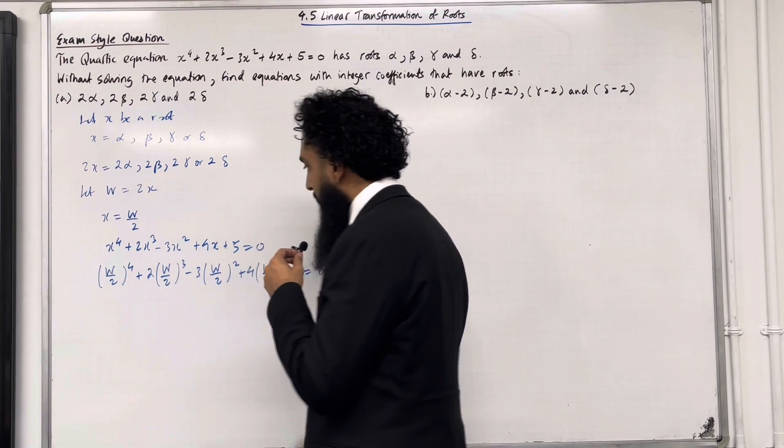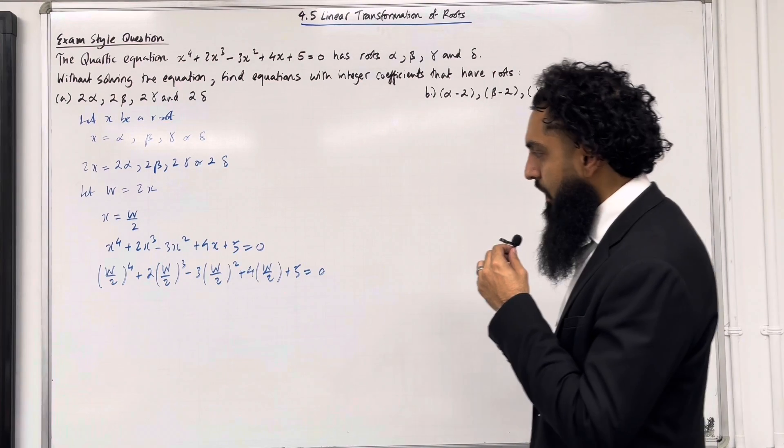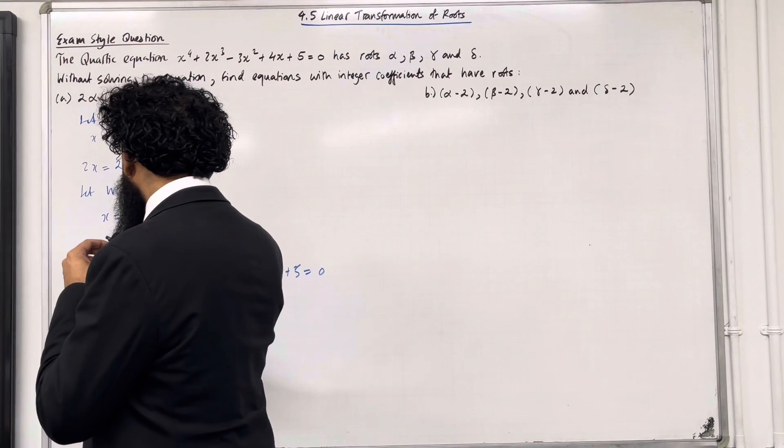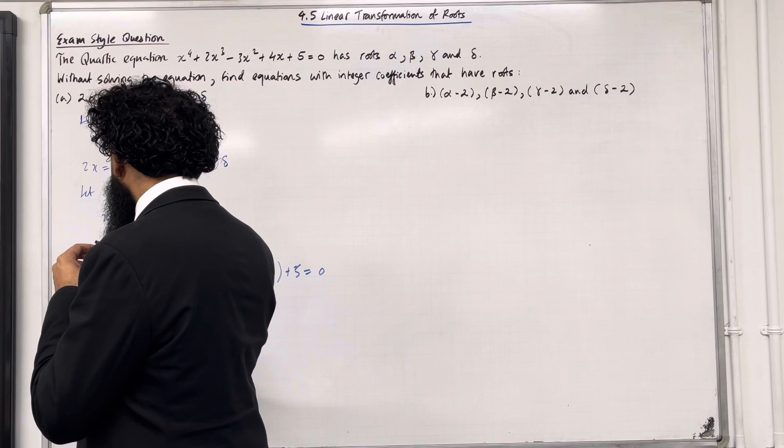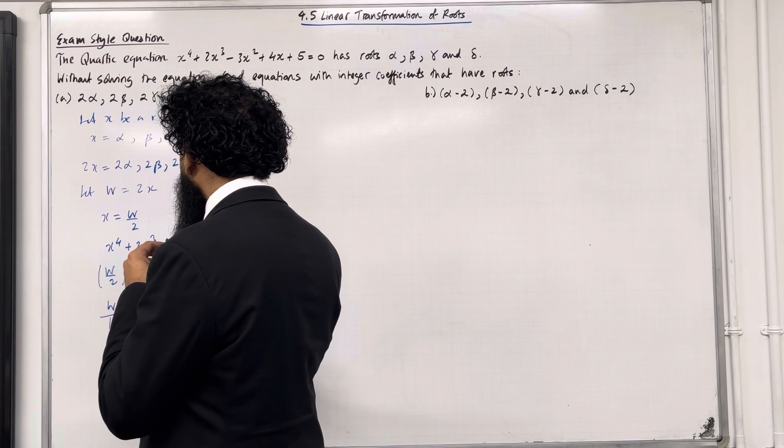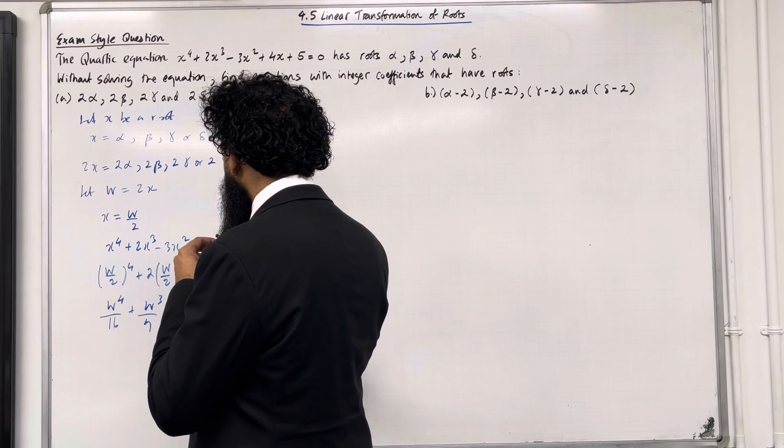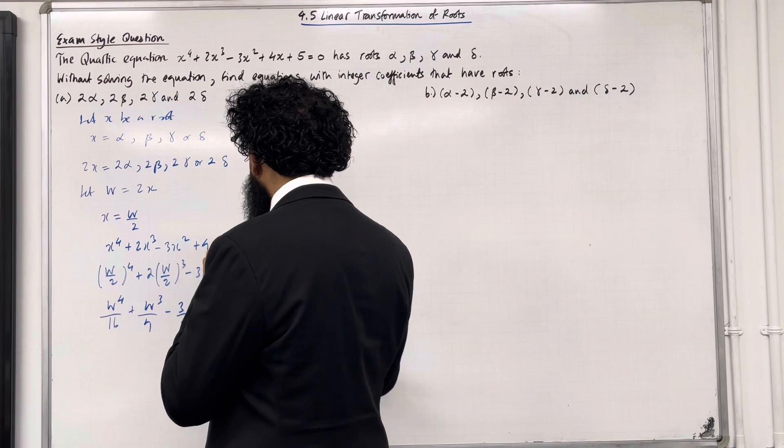So I can now simplify this and if I do this I get w⁴/16 + w³/4 - 3w²/4 + 2w + 5 = 0.